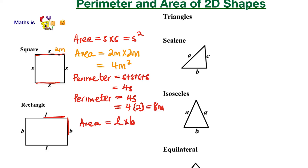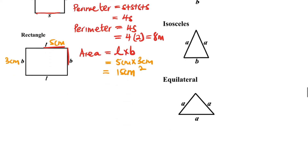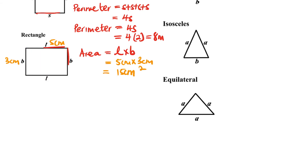Let's say this side is 5 centimeters and this side is 3 centimeters. So the length is 5 centimeters, and it will be 5 centimeters times 3 centimeters, which makes 15 centimeters squared. That's the area — you're calculating the space. If this was a room and you want to know how big the room is, it's 15 centimeters squared.